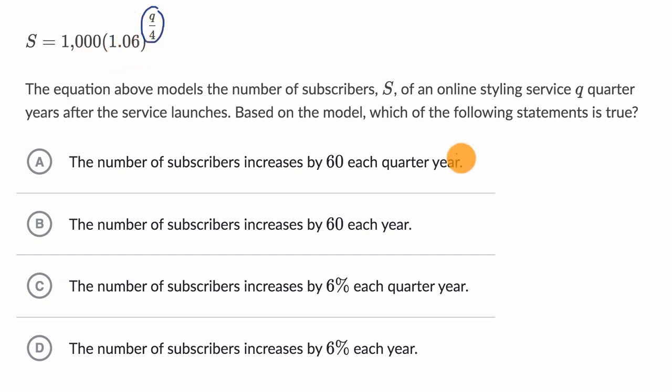So let's make a table here to think about how S grows with q. This is q, and this is S. I'm going to pick some q values that'll make the math simple. We notice that the exponent here is q over four. So let's say what happens when q equals zero, because zero over four is pretty easy to calculate. Let's say when four quarters have gone by, because four over four is pretty easy. And maybe when eight quarters have gone by, which is the same thing as two years.